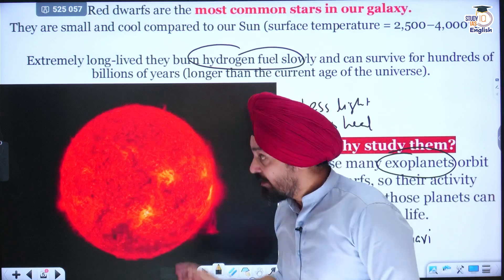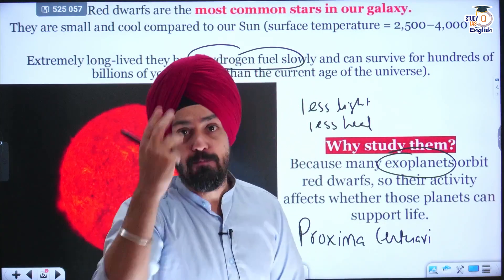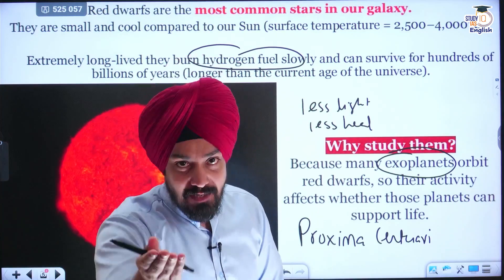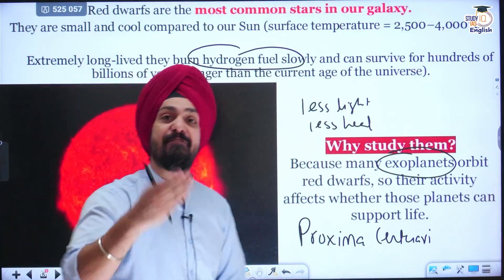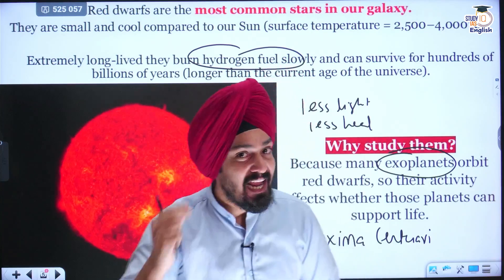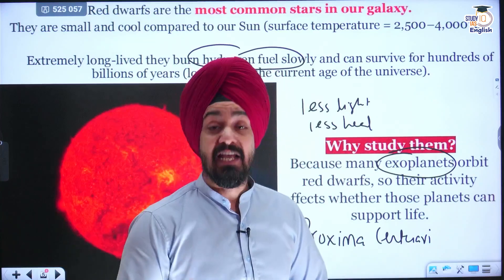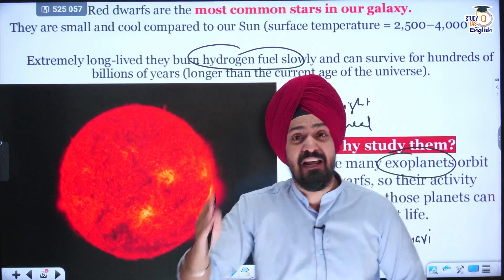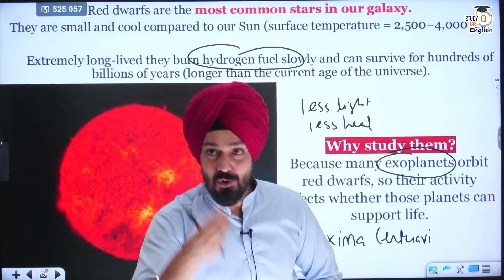This red dwarf has the possibility to make life possible on exoplanets, just as the sun made life possible on Earth. These planets also have the possibility to support life. Their discovery and understanding — how they originated, their age, their temperature — is very important for scientists, because by knowing them we can reveal many mysteries related to the origin of the universe and the origin of planets.